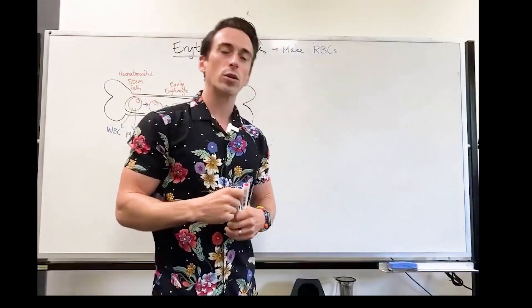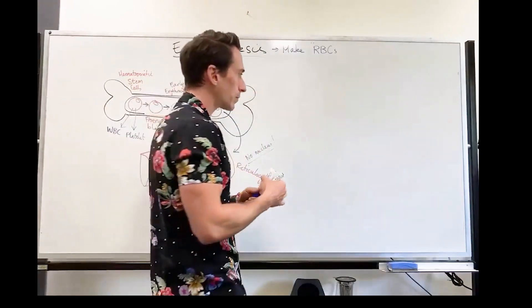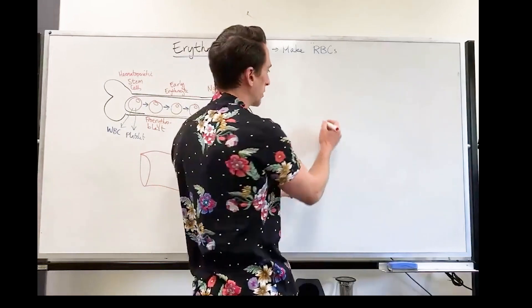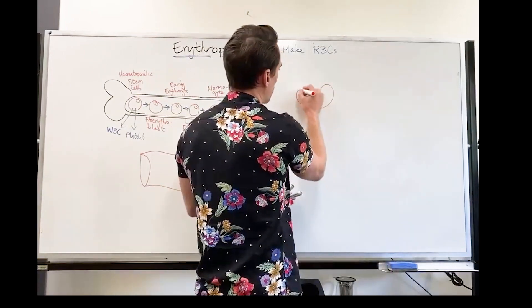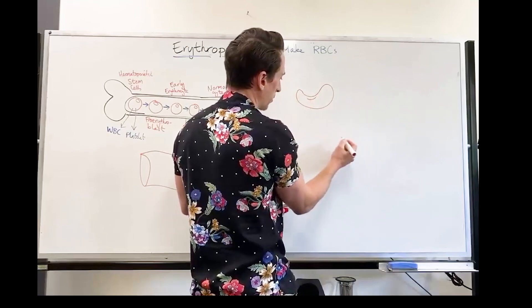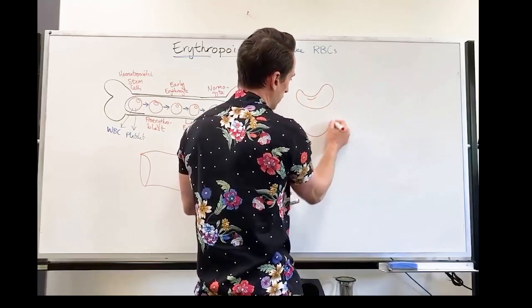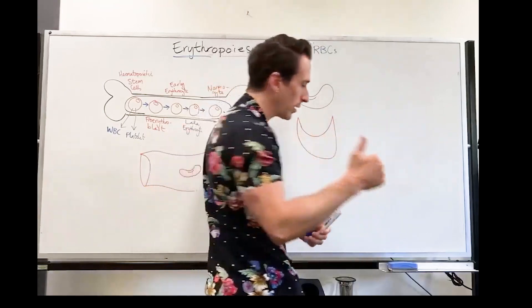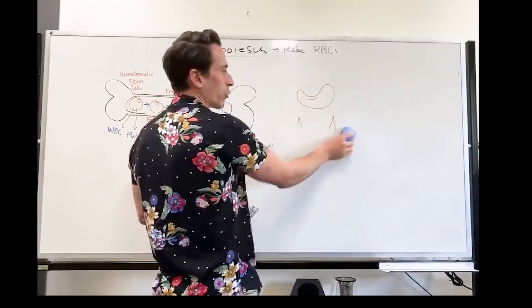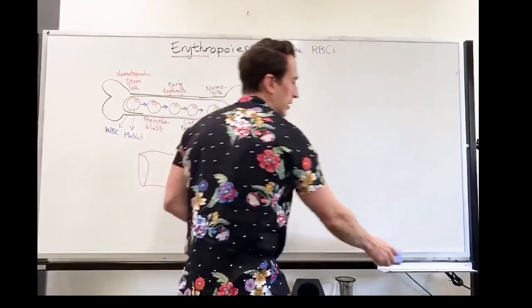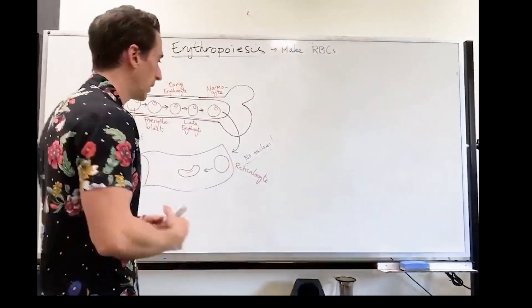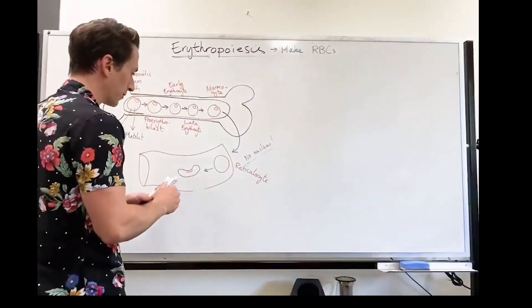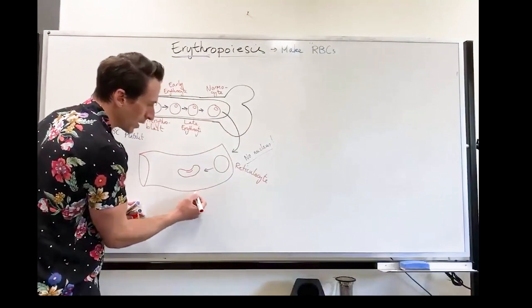Now there's a genetic disorder called sickle cell anemia, in which the red blood cell is shaped more like a sickle. So instead of being shaped like that, it's shaped basically like this. And it can't get through. One, it doesn't carry oxygen well. Two, it gets trapped and forms clots. So sickle cell anemia, that's what that is.